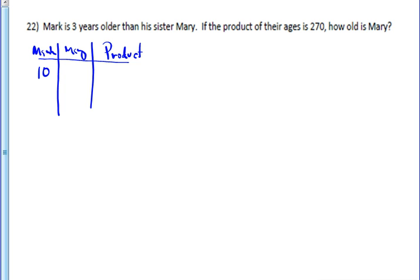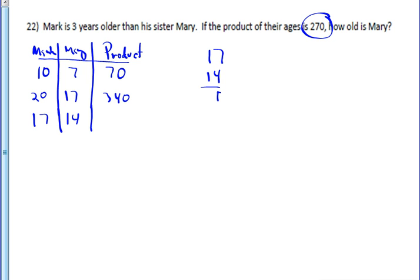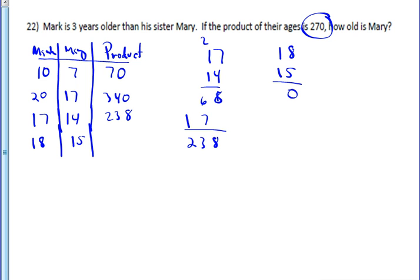When I multiply 20 and 17 together, I get 340, so the answer must be somewhere in between, probably closer to the top. Maybe I'll try Mark 17 and Mary 14. I do 17 times 14, but I've got a problem because I've got an 8 there and I need a 0. That gives me 238, which is just below where I need to be. So what if I tried 18 and 15? That seems like a good guess because 8 times 5 gives you the required 0. 18 times 15 is 270, so Mary would be 15 years old because she was the younger of the two.